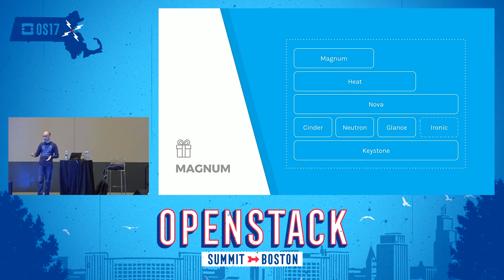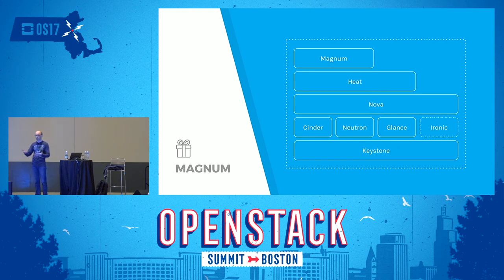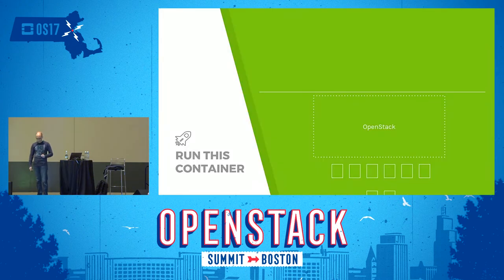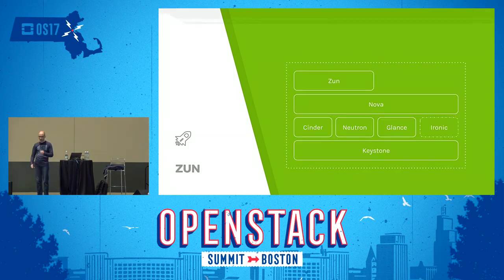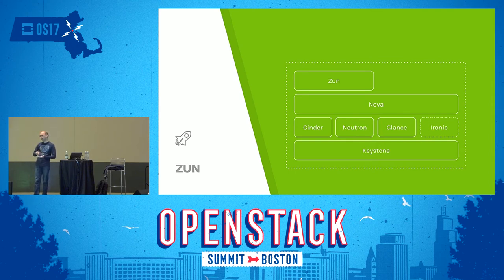But at that point you might say: I just want to run a single container. There's something on Docker Hub and I just want to run it. Do I have to instantiate a VM, install Docker on it, and run some command? Well, we have a solution for that. We have a project called Zun. Zun lets you run any container and will provision a bare-metal machine through Nova and Ironic to run it for you, and you can kill it when you're done. It's really as simple as: zun create [container-name-on-Docker-Hub].